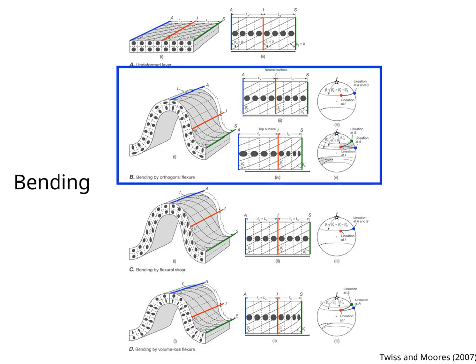Figure B shows bending by orthogonal flexure. In this case, the outer arc of the anticline is stretched, and the inner arc is shortened. The opposite occurs in the syncline. There is a neutral surface separating the zones of shortening and extension.